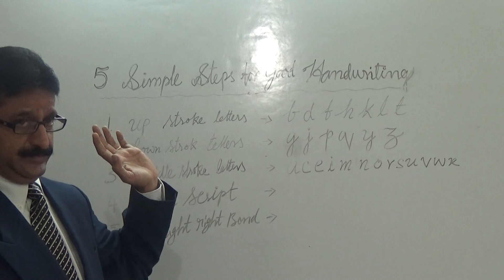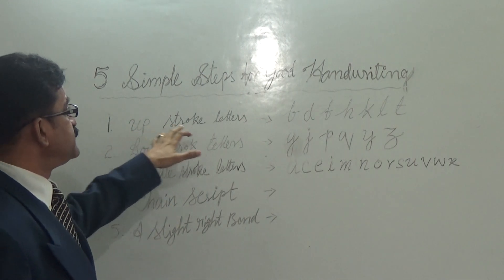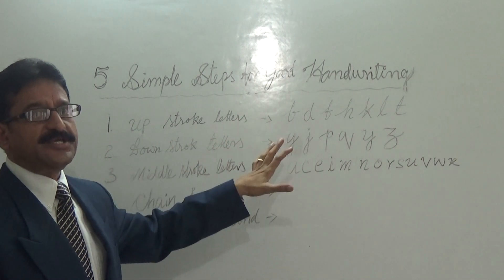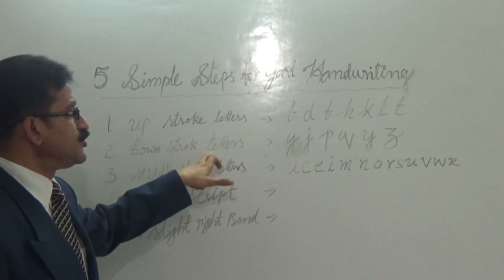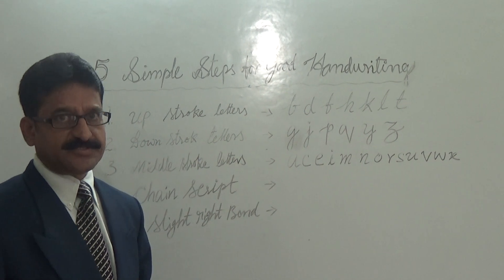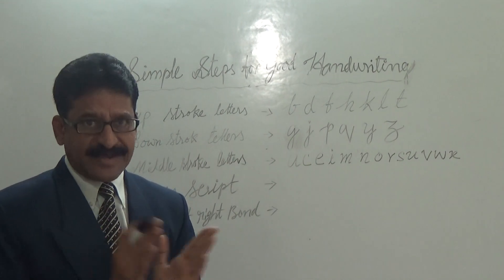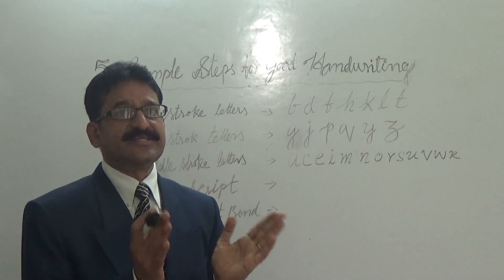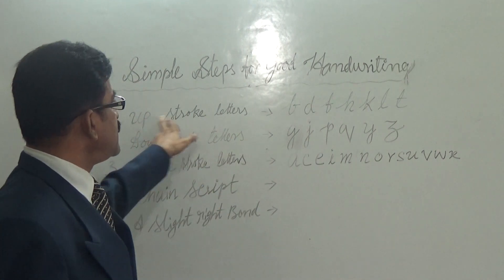The first point is about upstroke letters, the second point is downstroke letters, and third point is middle stroke letters. Actually the alphabet when we write English are three types. As we discussed, upstroke.